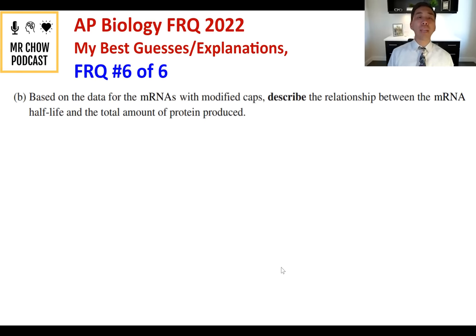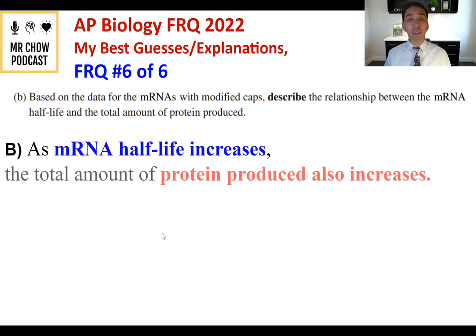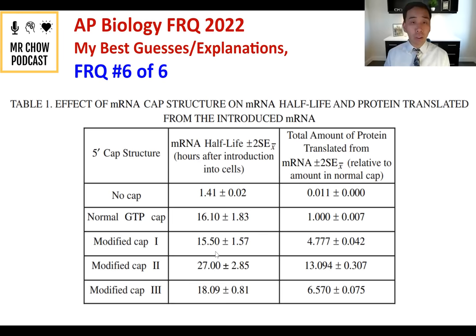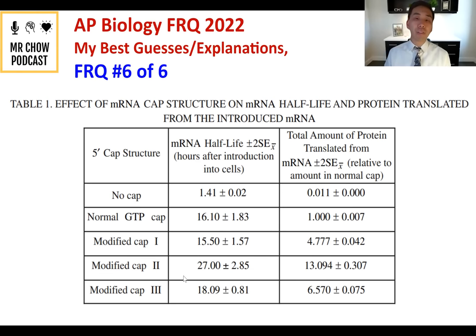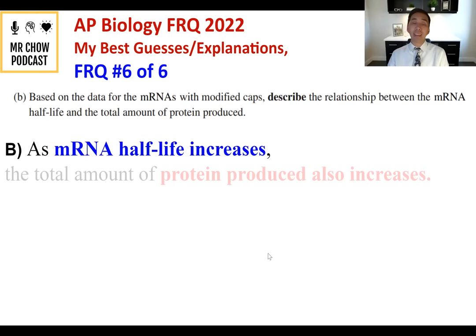Question 6B: Describe the relationship between mRNA half-life and total protein produced for modified cap mRNAs. As mRNA half-life increases, the total amount of protein produced also increases — there is a direct positive correlation between mRNA half-life and total protein production in this dataset.